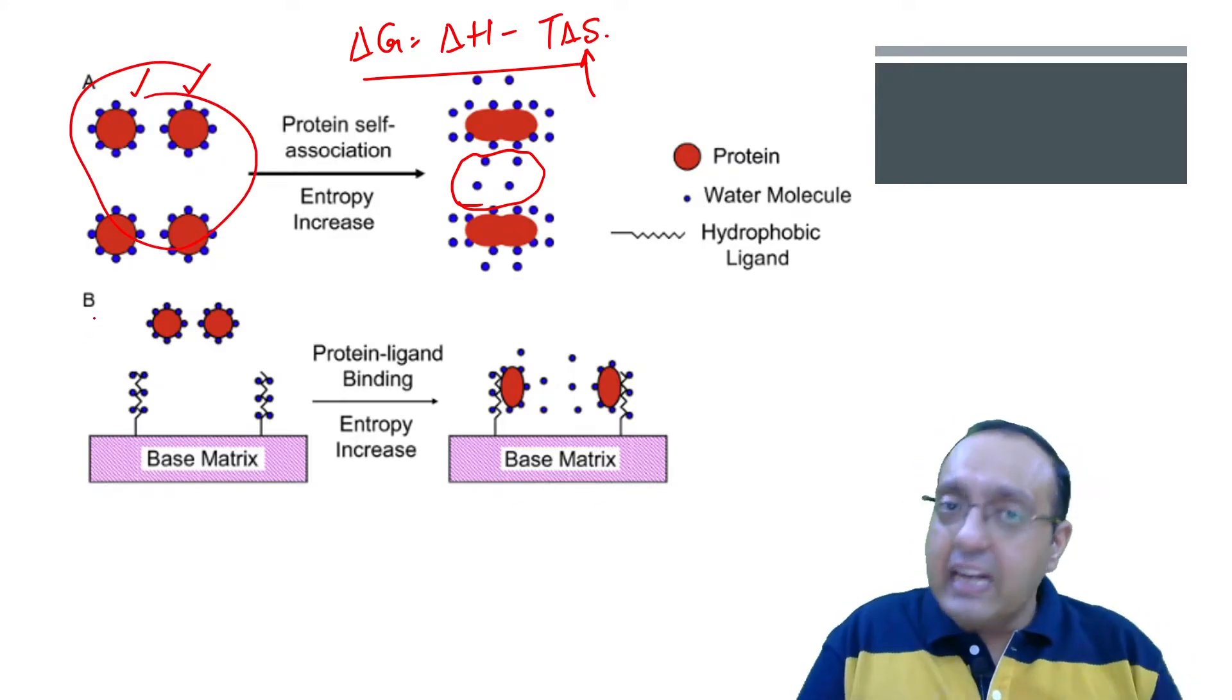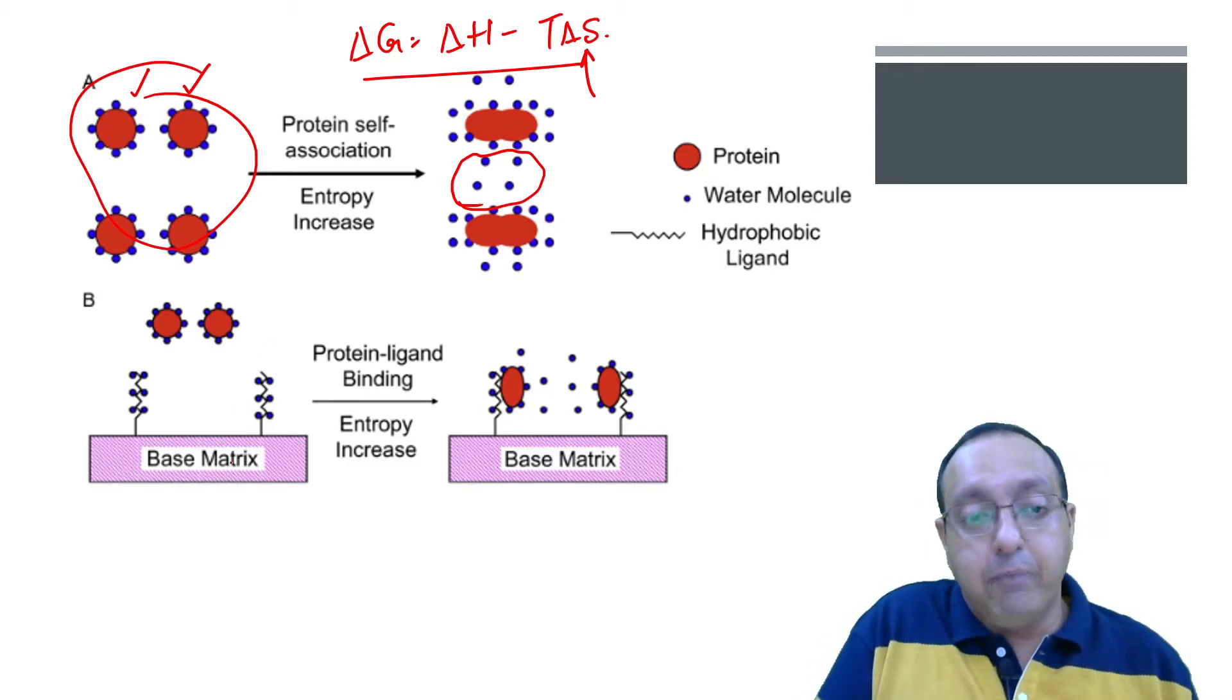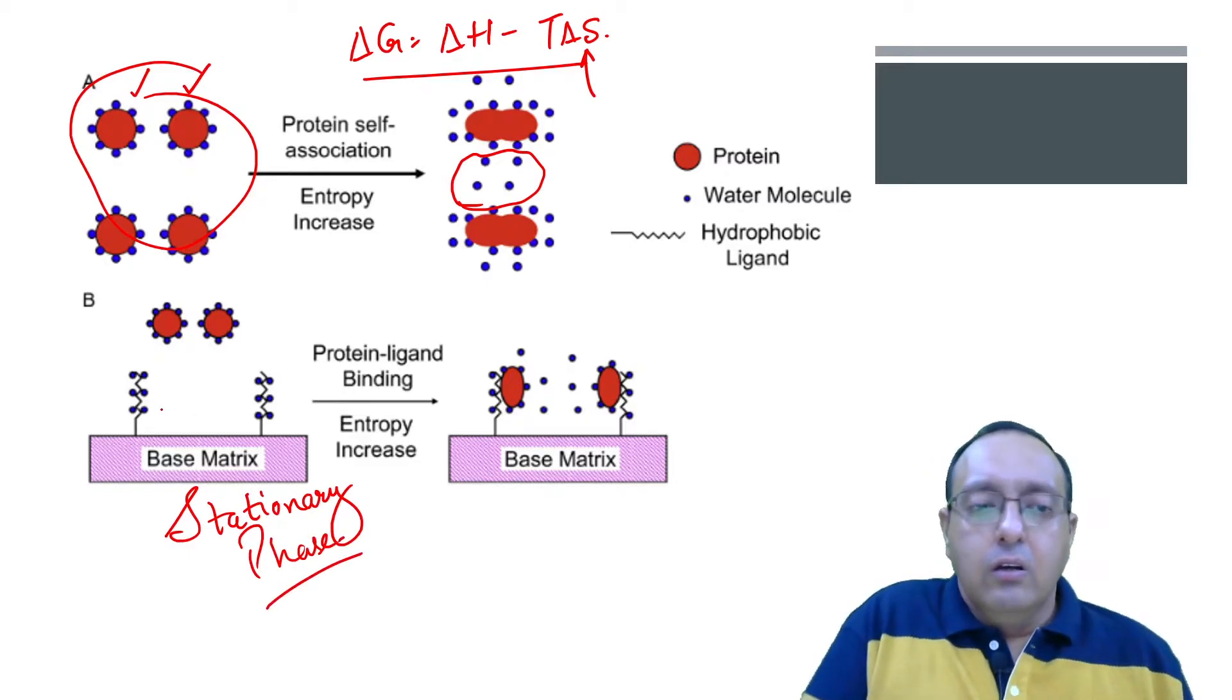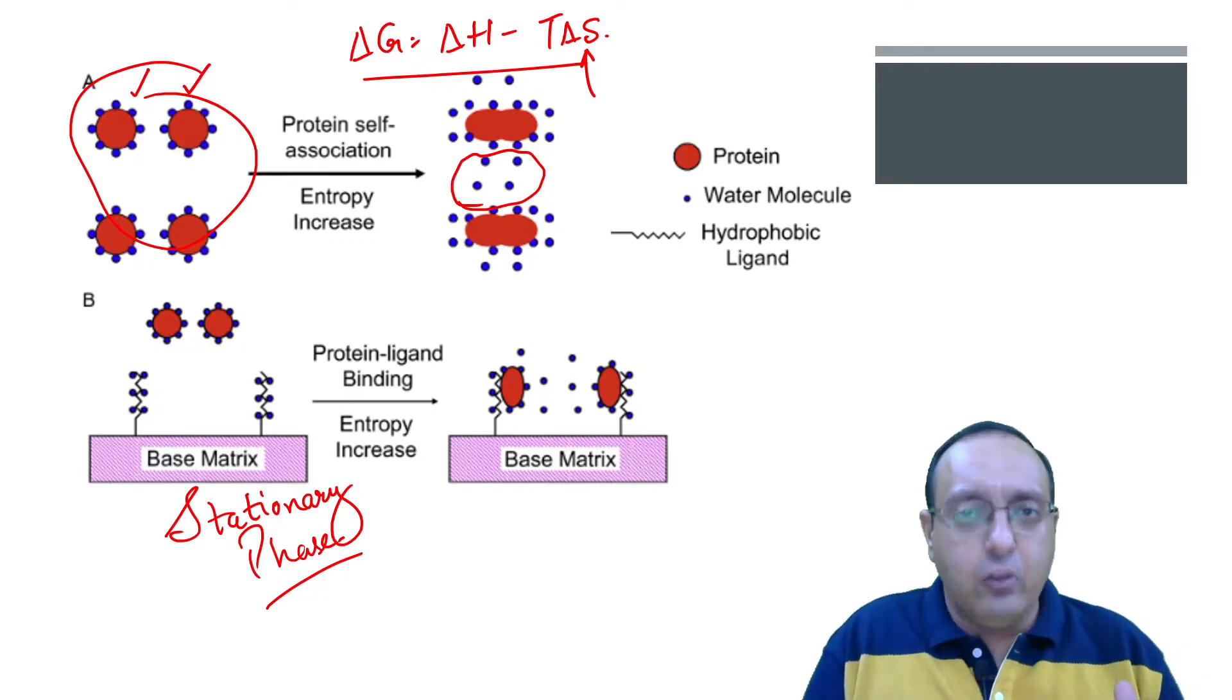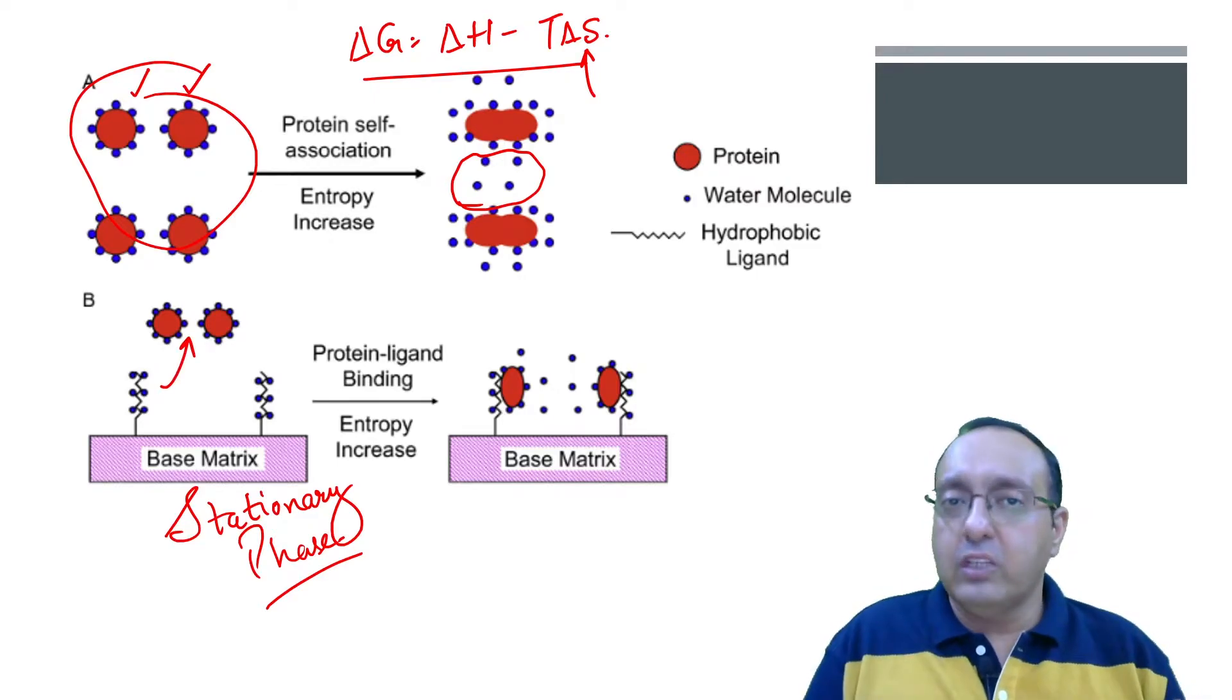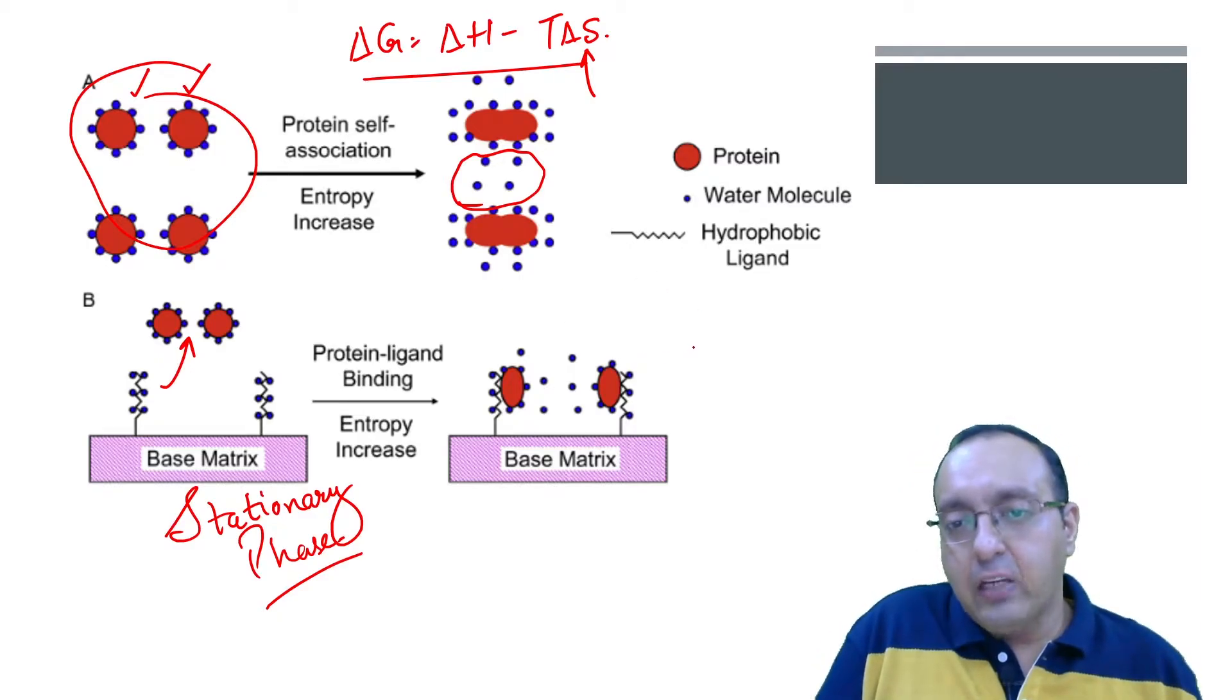And that's exactly what happens in hydrophobic interaction chromatography. What we have is a base matrix, which is our stationary phase, and it has attached some groups, usually hydrophobic groups, weakly hydrophobic groups, not strongly hydrophobic groups. And these try to bind to the proteins which are hydrophobic in nature. Now what drives this? It is driven by adding of salts. This procedure is also called salting out.